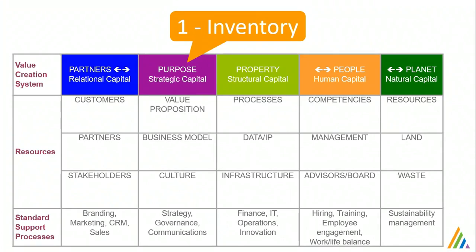While you may have inventories of some of these in different parts of your organization, it's rare that these are all in one place to draw a single picture of your value creation system — so this is a great place to start. In each of these boxes, I recommend putting three to five items, the most important resources in each of these categories.